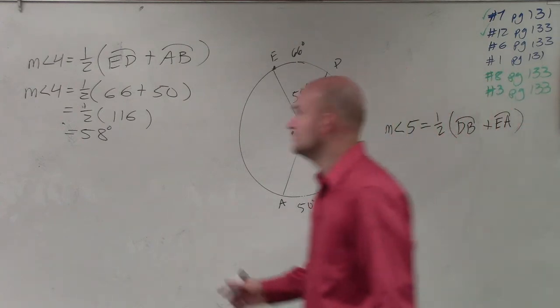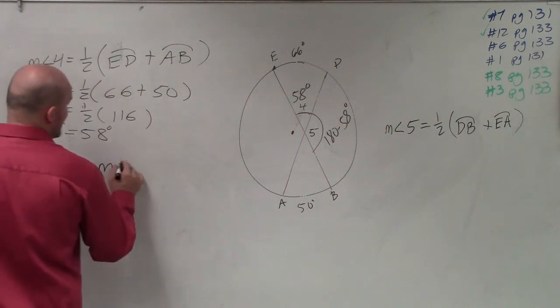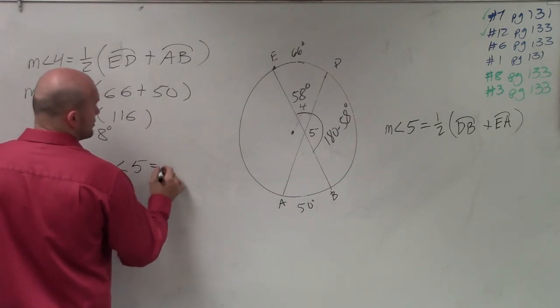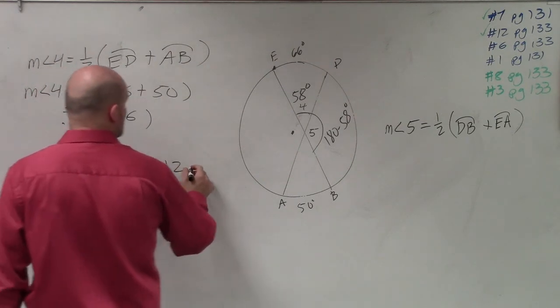Right? So therefore, measure of angle five is going to equal 122.